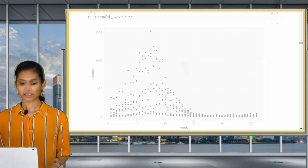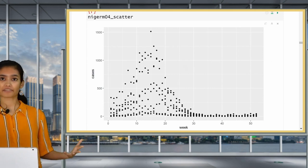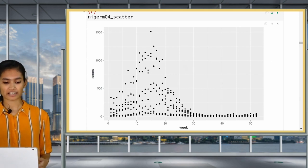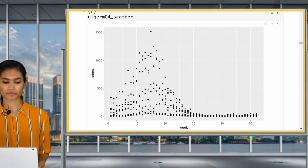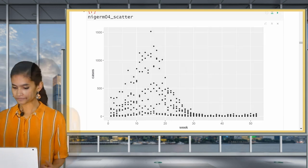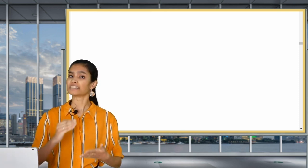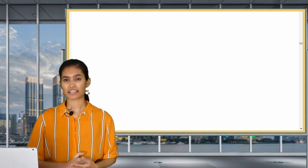Welcome back. I hope the practice question went well. The answer should look something like this. We'll see actually that even from 2004, you see the same pattern that between weeks 10 and 20 is when the highest peaks are. This is following the rainy season in Niger.